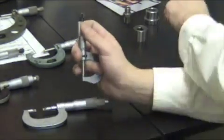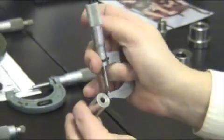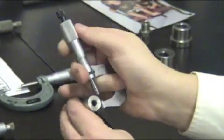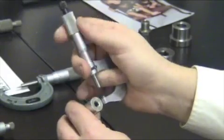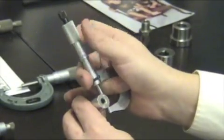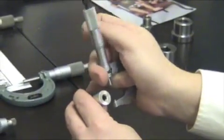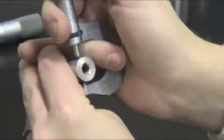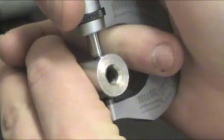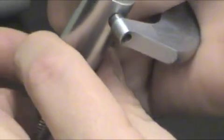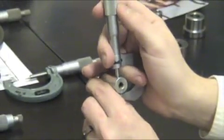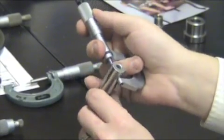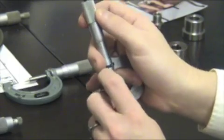Now I'm ready to take a measurement. Open it up until you get larger than this diameter of the part. Place the part between the spindle and the anvil. Slowly turn it, tighten it up. You want to make sure that it's evenly distributed on both sides of the diameter.